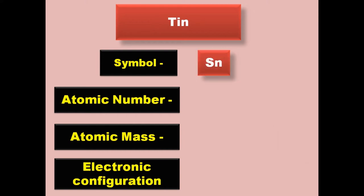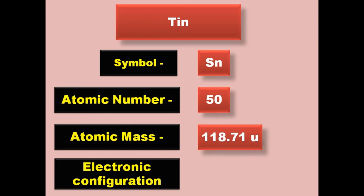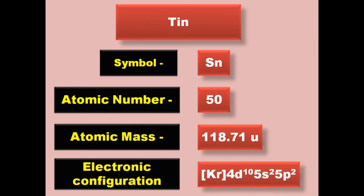Tin has symbol Sn, atomic number 50, atomic mass 118.71, electronic configuration [Kr] 4d10 5s2 5p2. Tin is a post-transition metal and exists in solid form at room temperature.